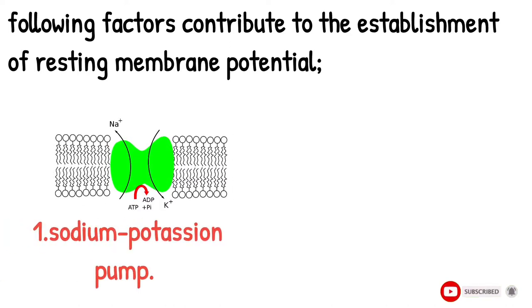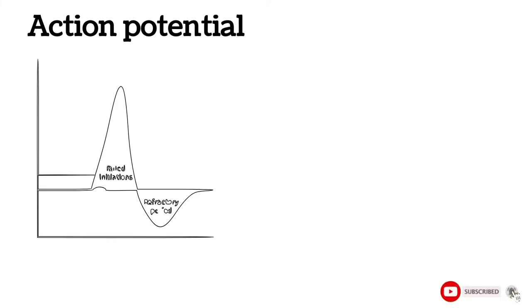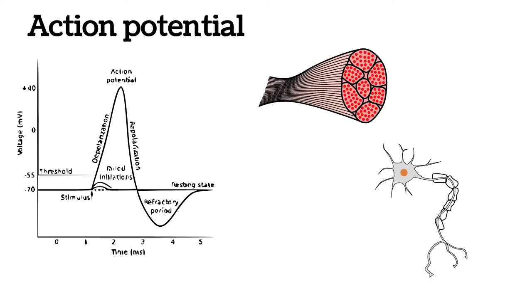The following factors cause or contribute to establishment and maintenance of resting membrane potential: sodium-potassium pump and selective permeability of cell membrane. Action potential is defined as a series of electrical changes that occur in the membrane potential when the muscle or nerve is stimulated.